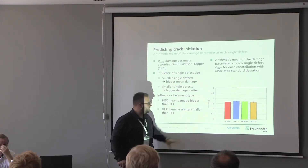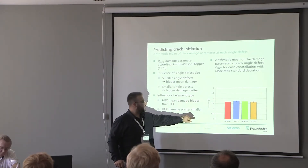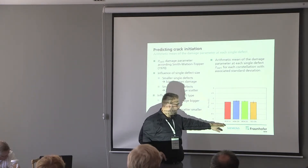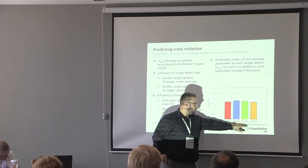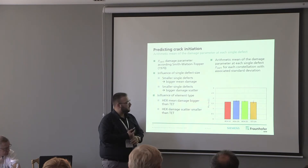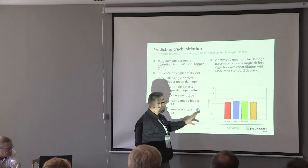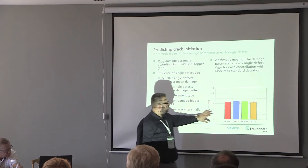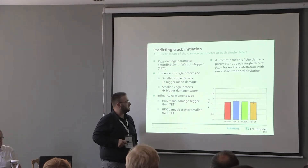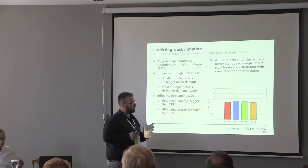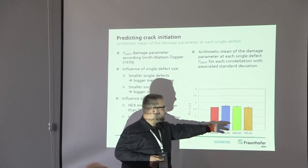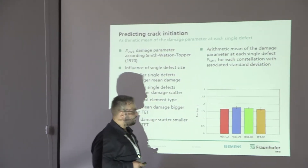We can see here the arithmetic mean of the damage parameter at each single defect and for each constellation: hex with two defects, nine, five, and tet with five defects. We see an influence of the single defect size — we have a bigger mean damage with smaller defects, and we also have a bigger damage scatter with smaller defects. Additionally, we see an influence of element type: with hex elements the mean damage is bigger than with tet, and with hex the damage scatter is smaller than with tet.